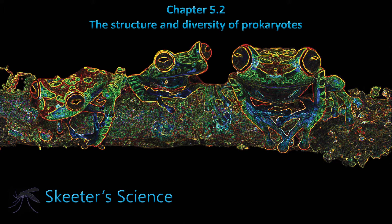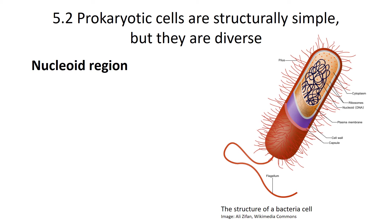Chapter 5, Section 2. This is about the structure and diversity of prokaryotes. When you compare a prokaryotic cell to a eukaryotic cell, the prokaryotes are structurally simple, but they're quite diverse, and that's something we're going to come back to.